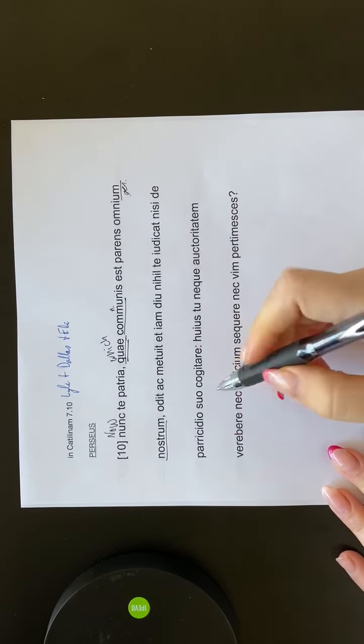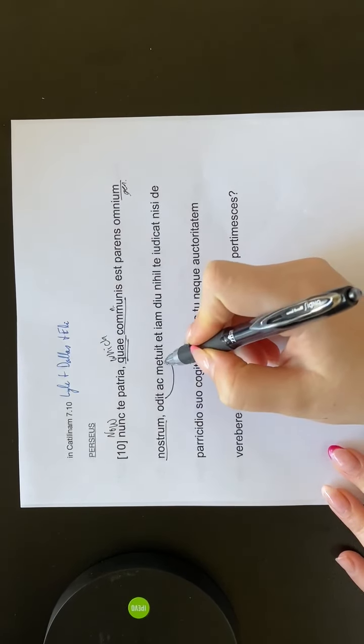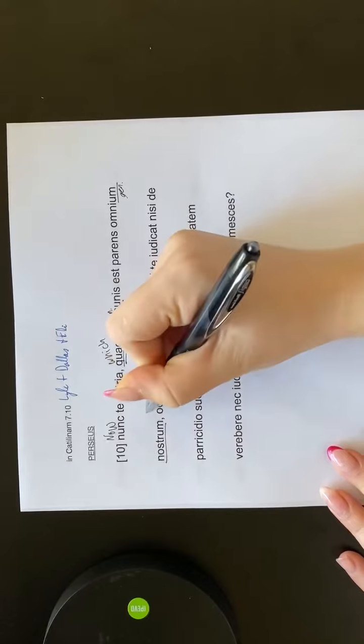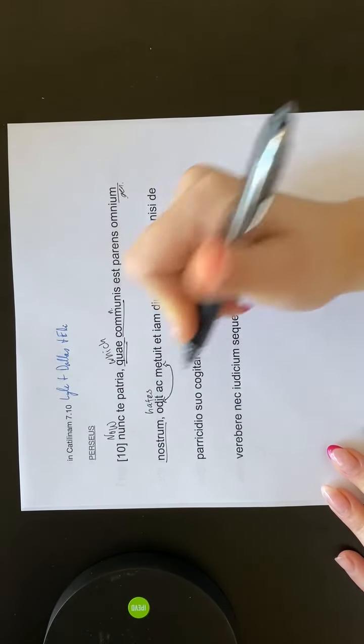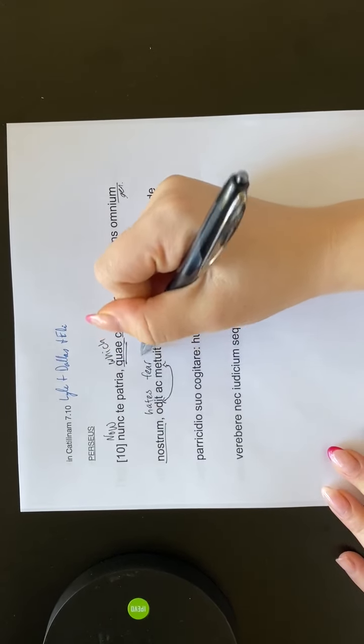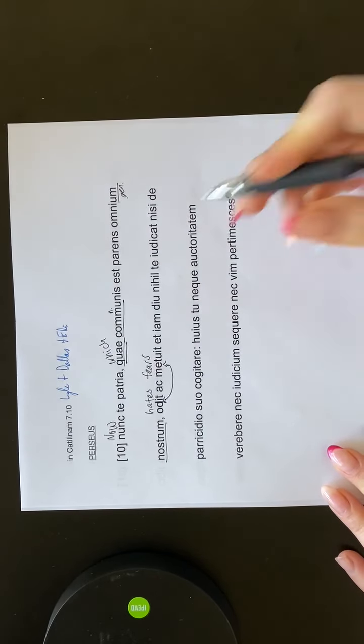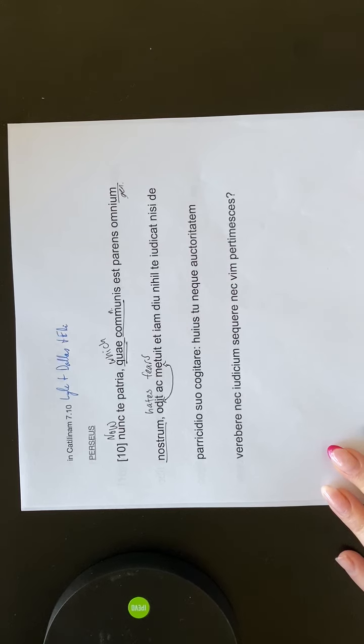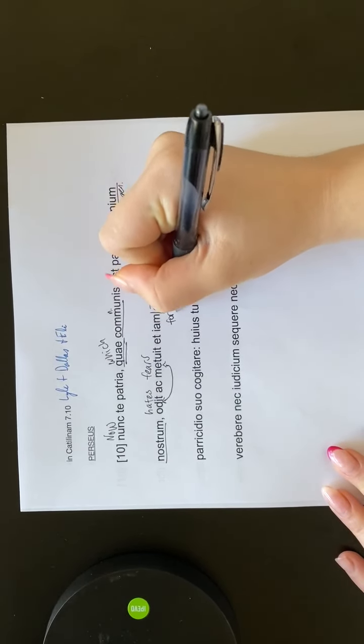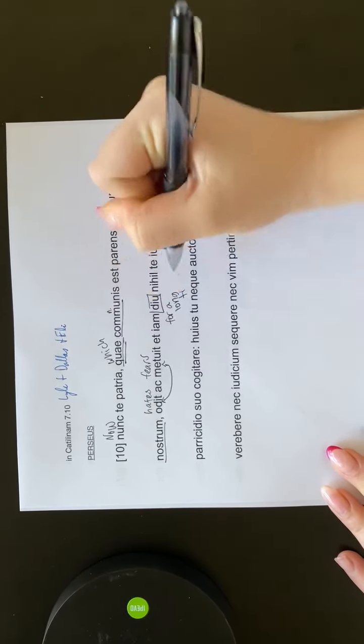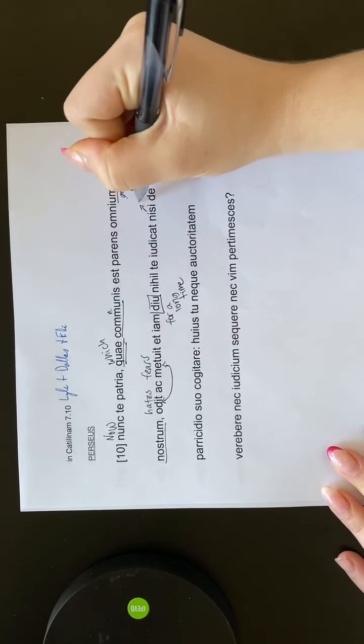Odit ak metuit et iam diyu nihil te iudikat nisi de parikidio suo kogitare. Odit here is to hate. Metuit is to fear. Diyu means just, like, for a long time. And this is if not, parikidio is patricide, so it's like the murder.